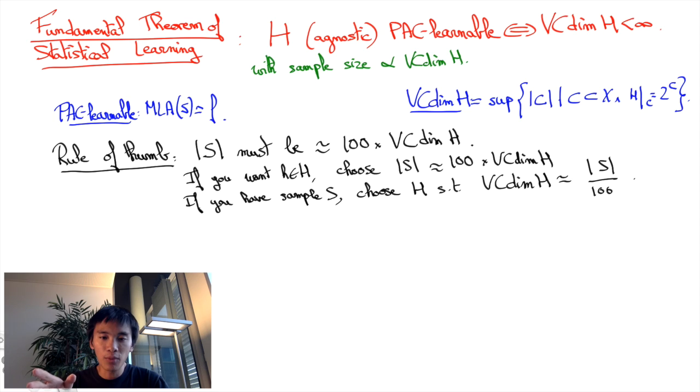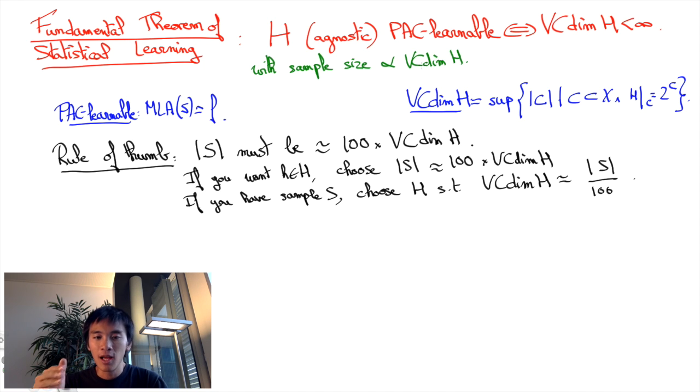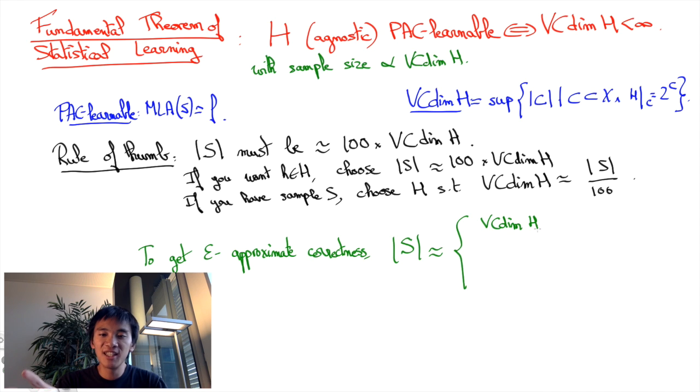I should note that the sample size is slightly affected by whether or not you expect the prediction function to belong to your hypothesis class. Indeed, to guarantee the epsilon approximate correctness of your machine learning algorithm, the sample size you'll need is roughly D divided by epsilon if you know that the prediction function is in your hypothesis class. But you'll need a sample that's as large as D divided by epsilon squared if the real prediction function isn't.